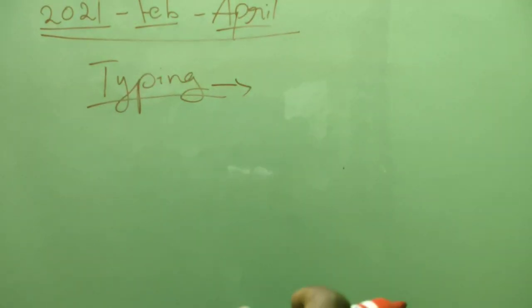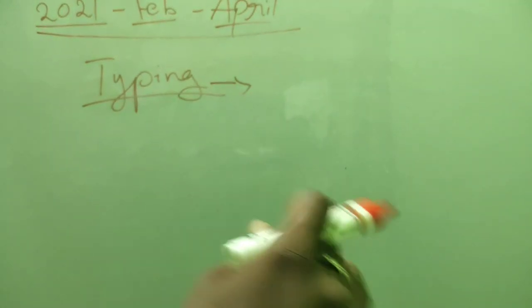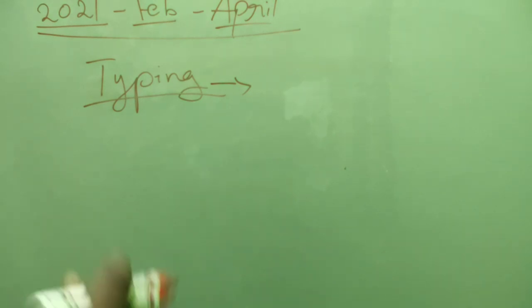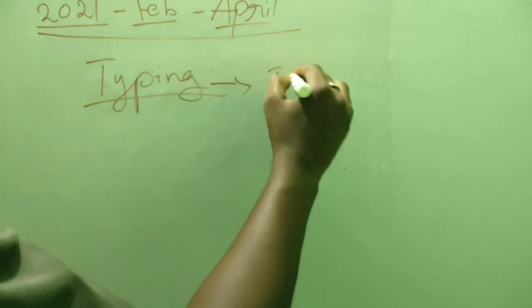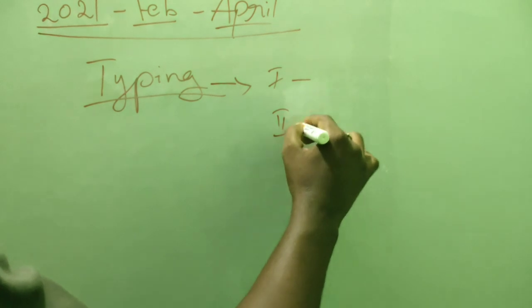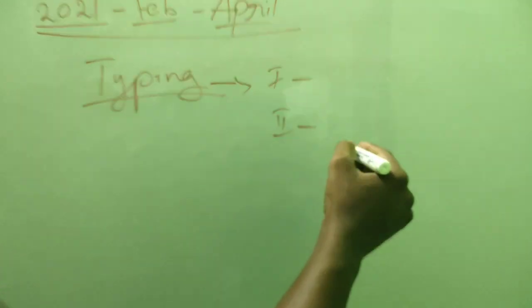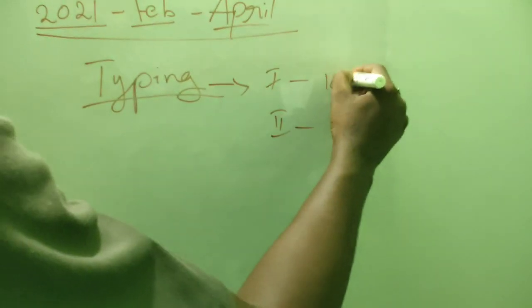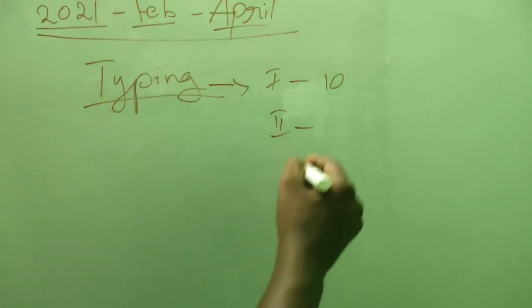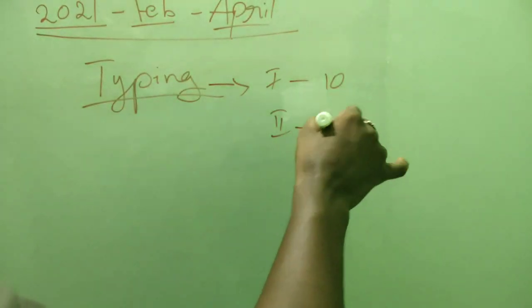You will need pen, pencil, rubber, and scale. There are 2 papers: first paper, then second paper. In the first paper, the speed is about 10 minutes. In the second paper, the speed is about 15 minutes.